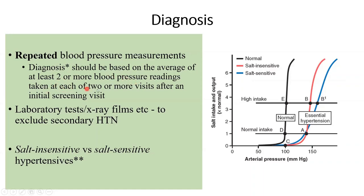Hypertension diagnosis is based on an average of at least two or more high blood pressure readings taken at each of two or more visits. If the person had two or more high readings in a visit, ask them to return, or have them keep a diary of serial blood pressure at home, and repeat readings in your office as well.